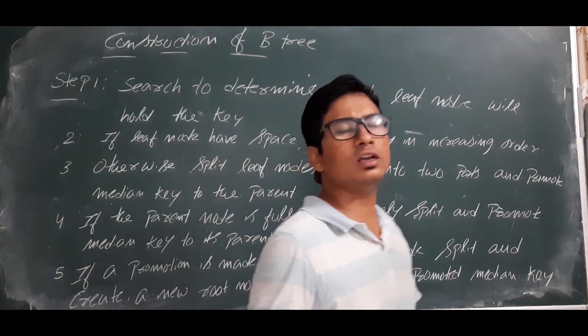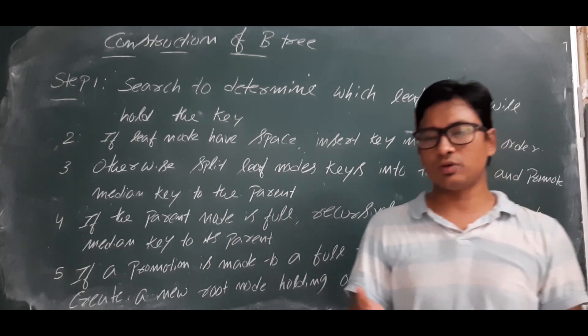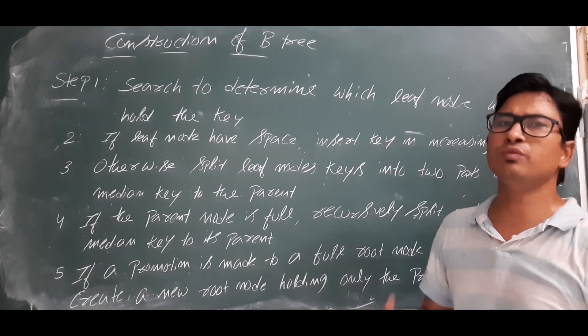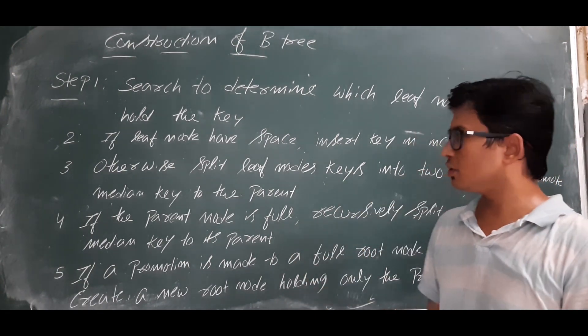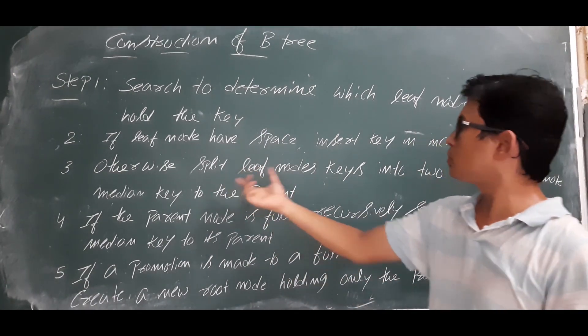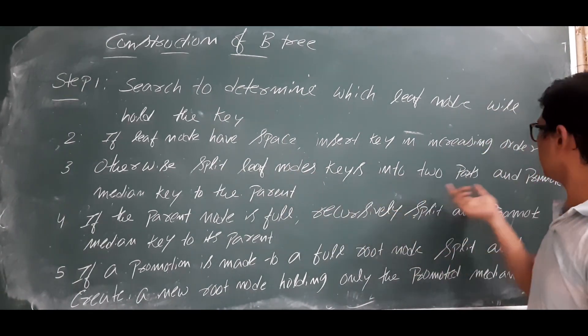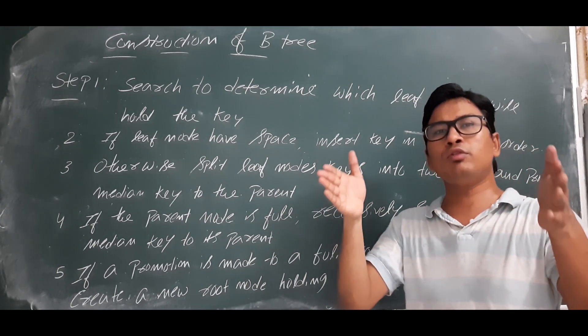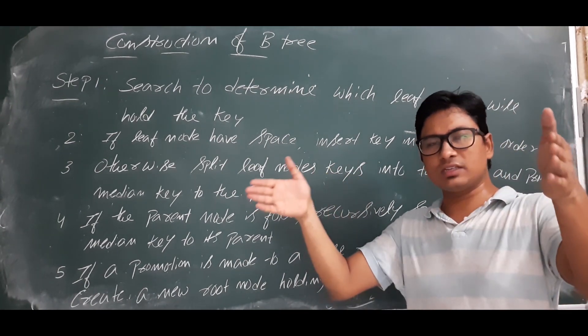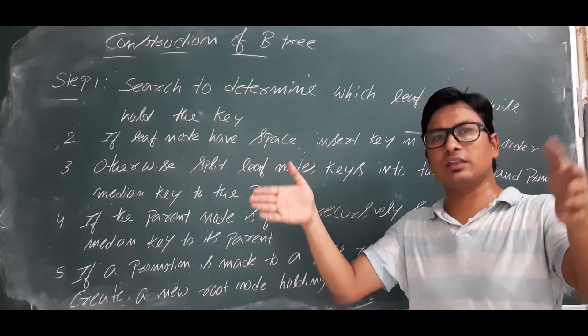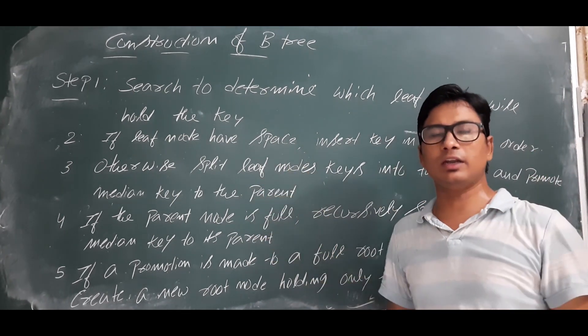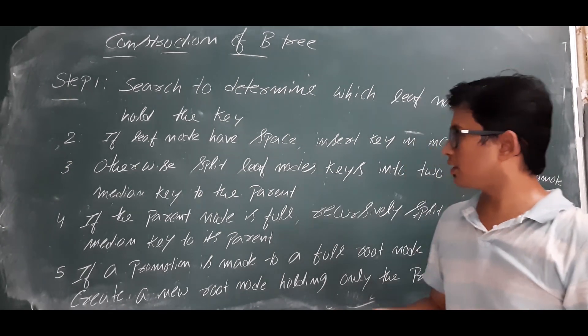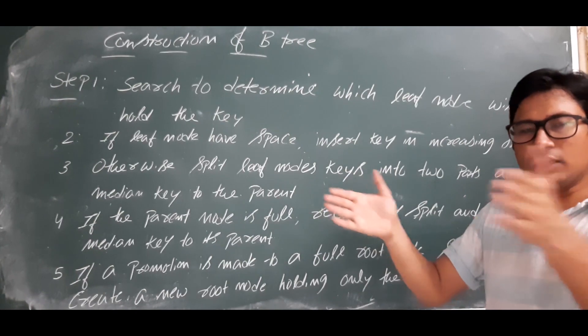Step 3: Otherwise, if there is no space, we call that condition an overflow condition. If it is overflow condition, then what we have to do - we do not have space to insert that node. In that case, split the leaf nodes into two parts and promote the median key to the parent. You have to split the node, find the median among them, promote it to the parent node, and split the remaining thing into two parts.